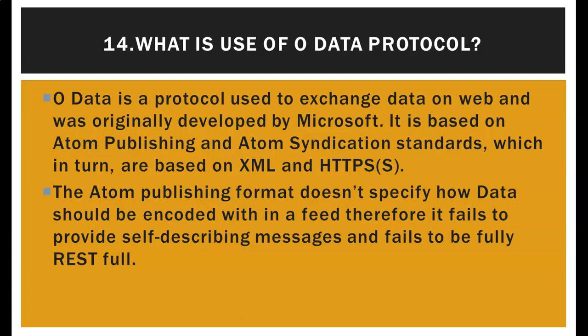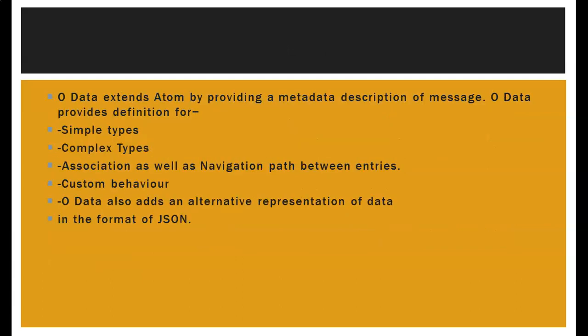What is the use of the OData protocol? OData is a protocol used to exchange data on the web, originally developed by Microsoft. It is based on ATOM publishing and ATOM syndication standards, which are in turn based on XML and HTTPS. The ATOM publishing format doesn't specify how data should be encoded within a feed, so it fails to provide self-describing messages and fails to be fully RESTful. OData extends ATOM by providing a metadata description of messages, definitions for simple types, complex types, associations, navigation paths, and also adds an alternative JSON representation of data.